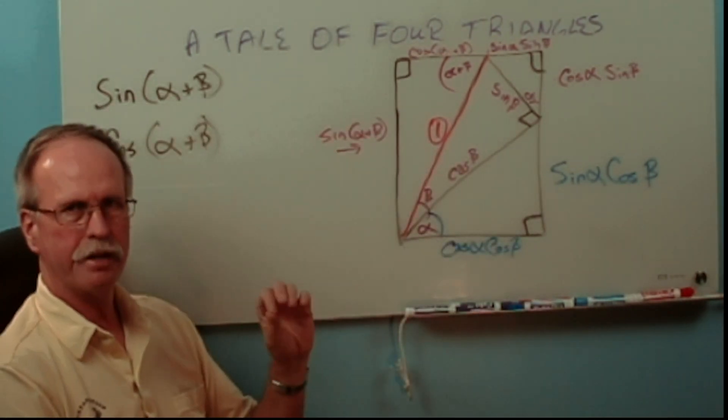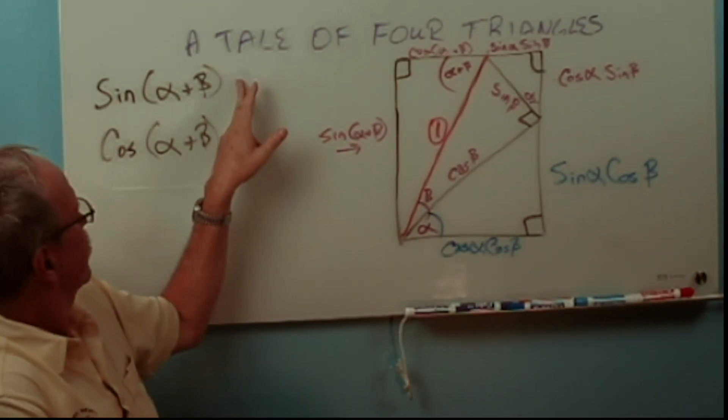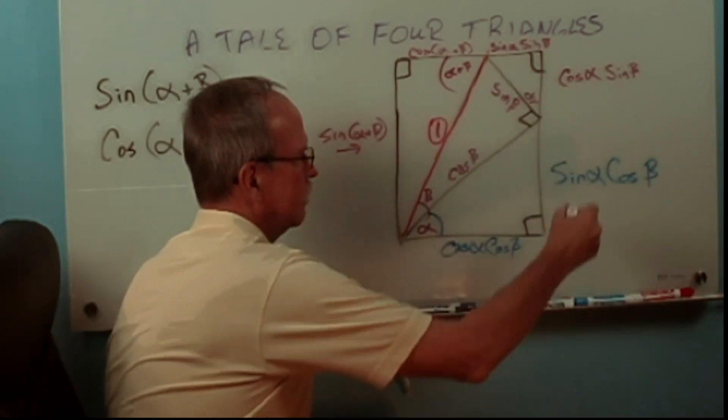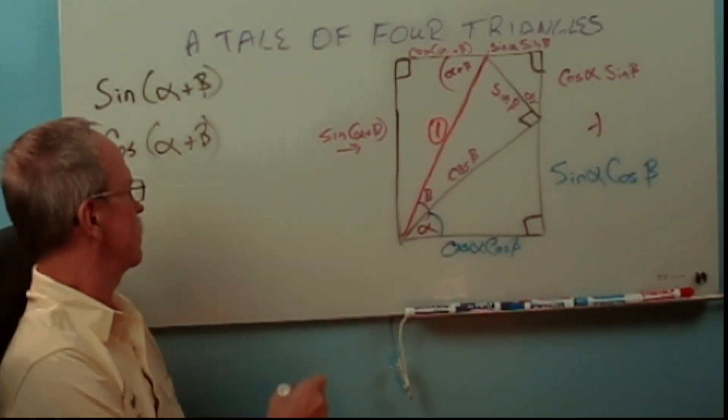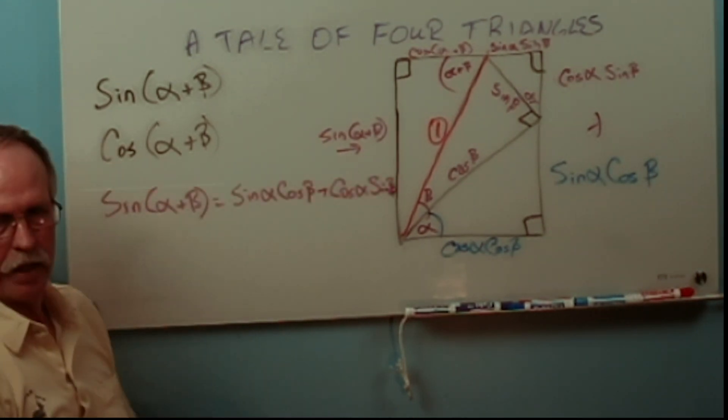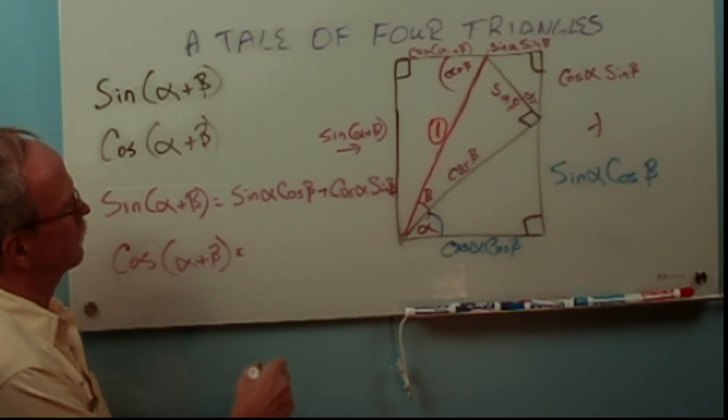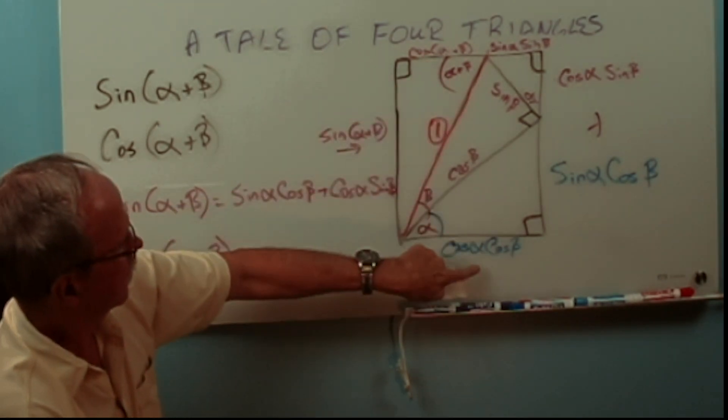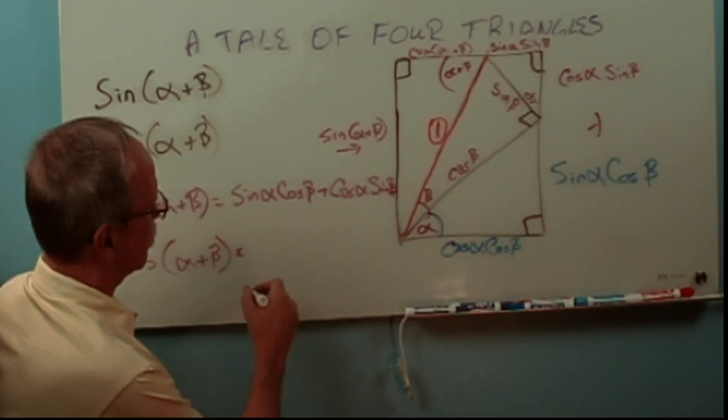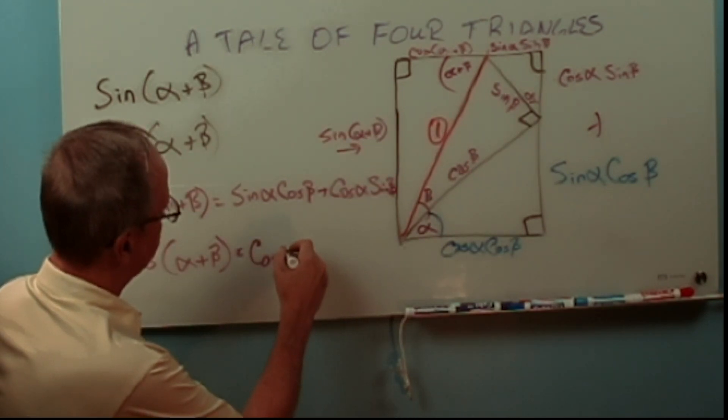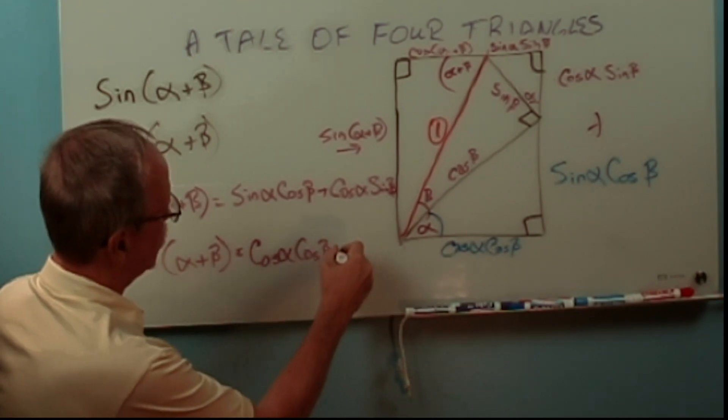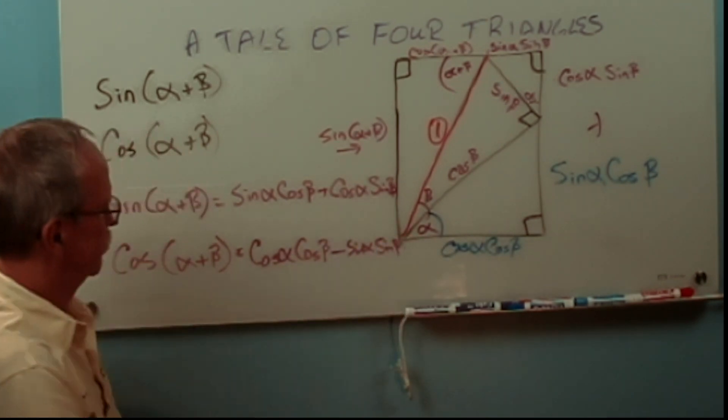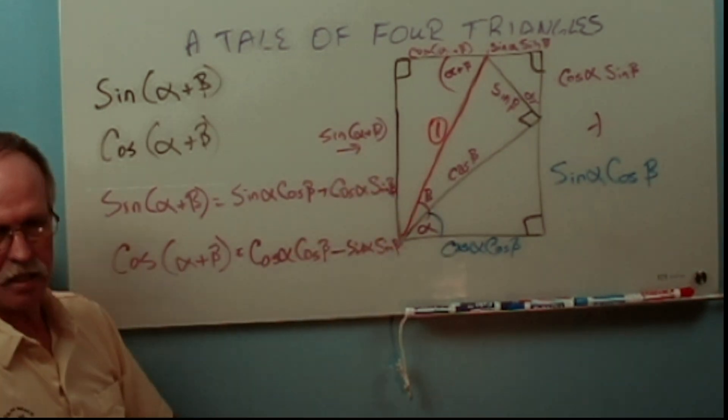Now this is really a straightforward problem from here out. Our first question, what is sine alpha plus beta? Well, it's right there. And what does that equal? It equals that plus that. Make sense? So, that is the identity for that. What about the cosine? Well, there's the cosine of alpha plus beta. And what does it equal? It equals that minus that. So let's write that in. So we've got cosine alpha cosine beta minus sine alpha sine beta. And there are our identities. And that's how you do a proof of them.